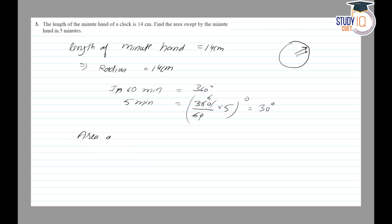As we know that area of sector of angle theta degree is equal to theta by 360 degree into pi r square.